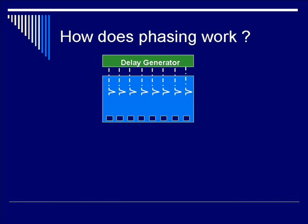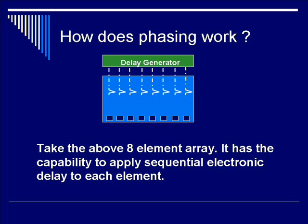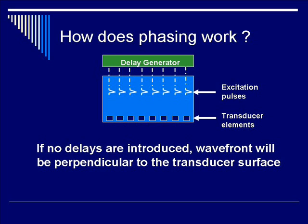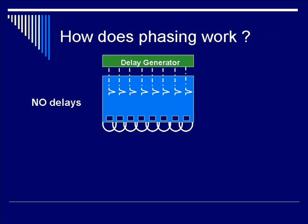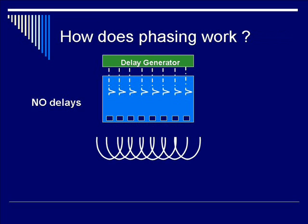Now how does phasing work? It involves an electronic delay generator attached to the back of the transducers. Here you have an eight-element array with the capability to apply sequential delays to each element. The transducer elements and excitation pulses are labeled. If no delays are introduced, the wavefront will be perpendicular to the transducer surface. With no delays, each element produces an ultrasound pulse with a characteristic wavefront that are in sync with one another. Therefore, the direction of the wavefront is straight ahead.